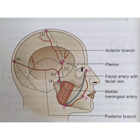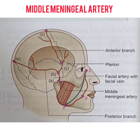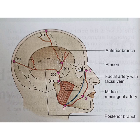Middle Meningeal Artery surface markings are defined by joining five points. Point A is immediately above the middle of the zygoma, where the artery enters the skull. Point B is 2cm above point A, where the artery divides deep to this point. Point C is 3.5cm behind and 1.7cm above the frontal zygomatic suture. Point D is midway between the nasion and inion.